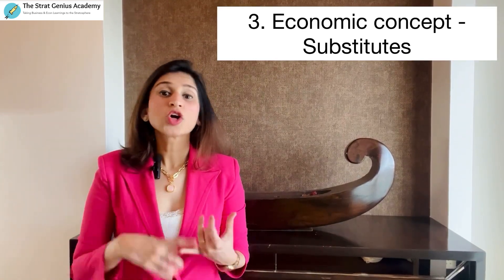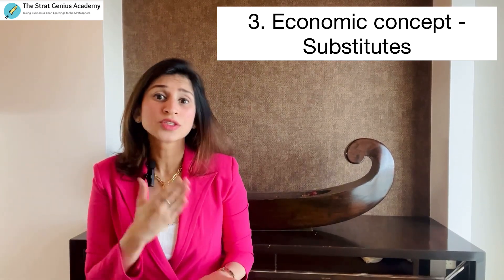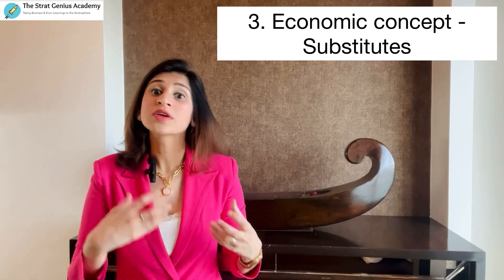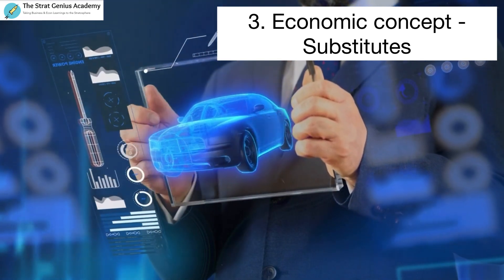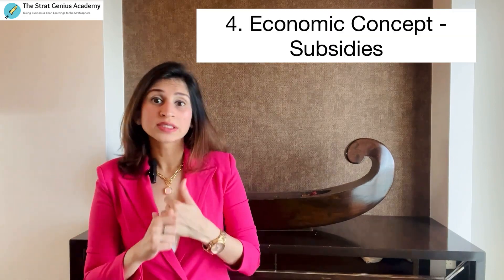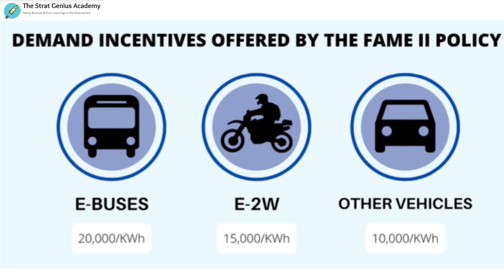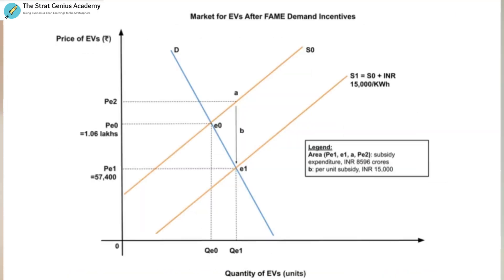Next, take another theory — talk about substitutes. EVs are a more eco-friendly substitute for widely used conventional vehicles: instead of combusting fossil fuels, they run on electricity. Show how closely EVs can actually substitute conventional vehicles. You can also talk about the subsidies that the FAME policy provides, known as demand incentives, and mention the funds allocated for these incentives. Using actual data, show how these subsidies have helped reduce the price of EVs and hence increase the quantity demanded — illustrated through a diagram.